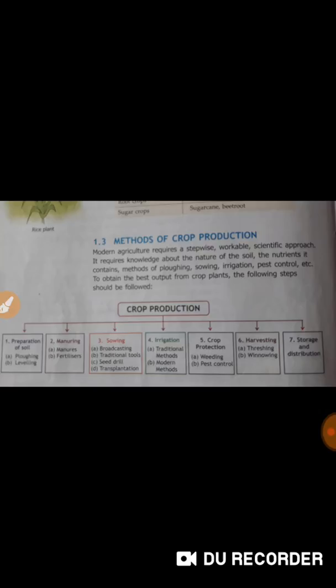Let's take preparation of soil. Preparation of soil is the process by which the soil is made suitable for sowing of seeds. This involves the steps like ploughing. Ploughing is also called tilling.